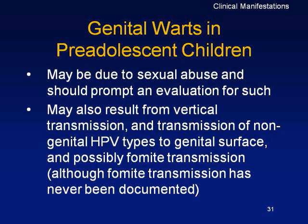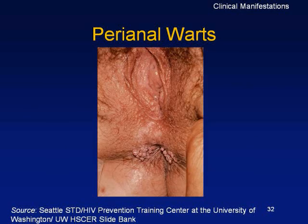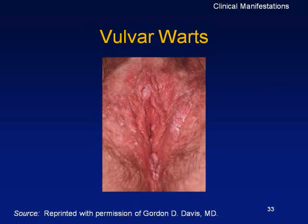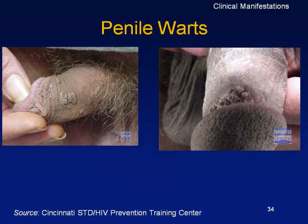Here you can see typical perianal warts, typical vulvar warts with redness easily confused with fungal infection — not easy to diagnose. The whole perianal area can be involved. Penile warts are visible on the shaft. There is also a typical case of intrameatal warts — within the opening of the anterior end of the urethra — which is rare but possible, and very painful especially in men.